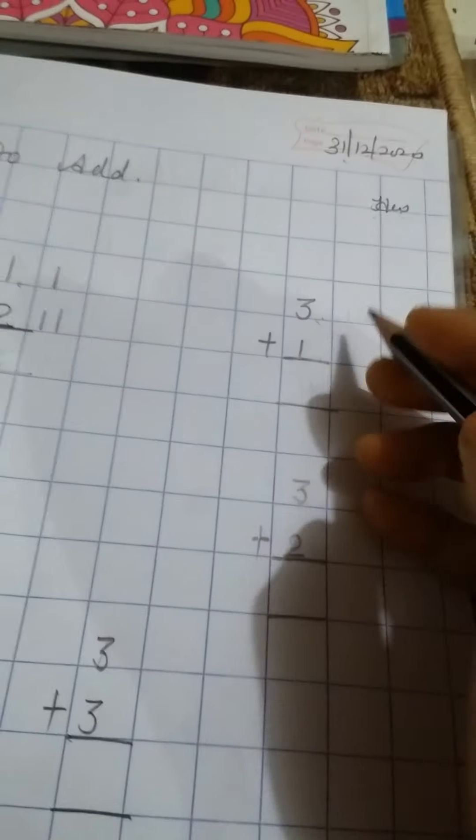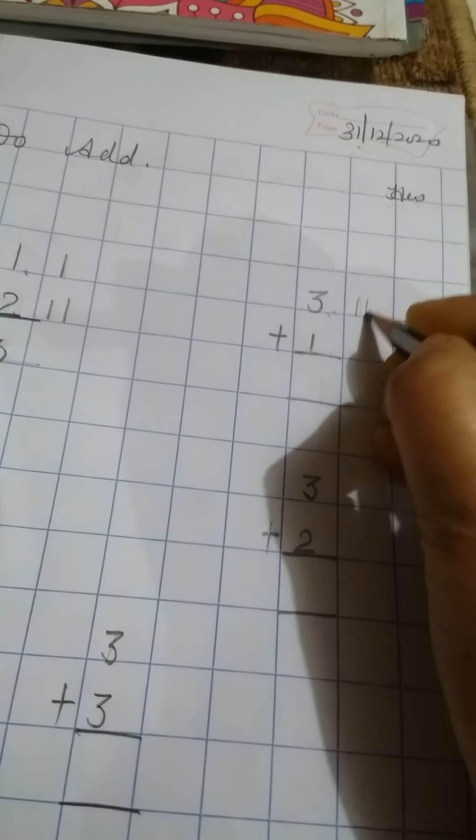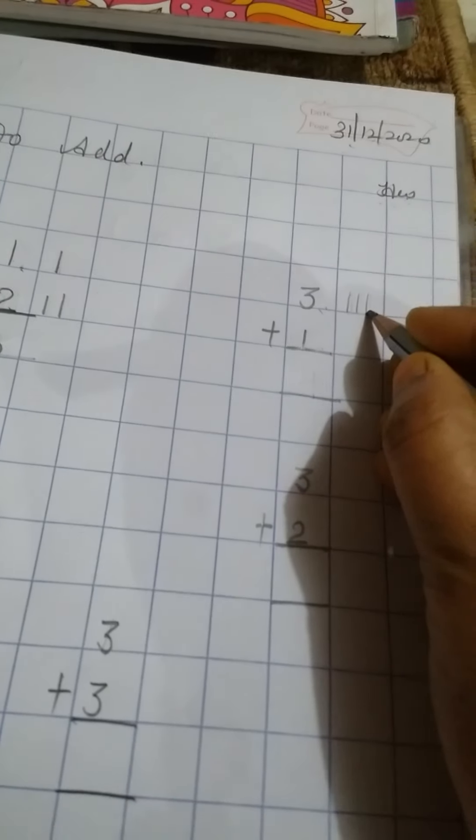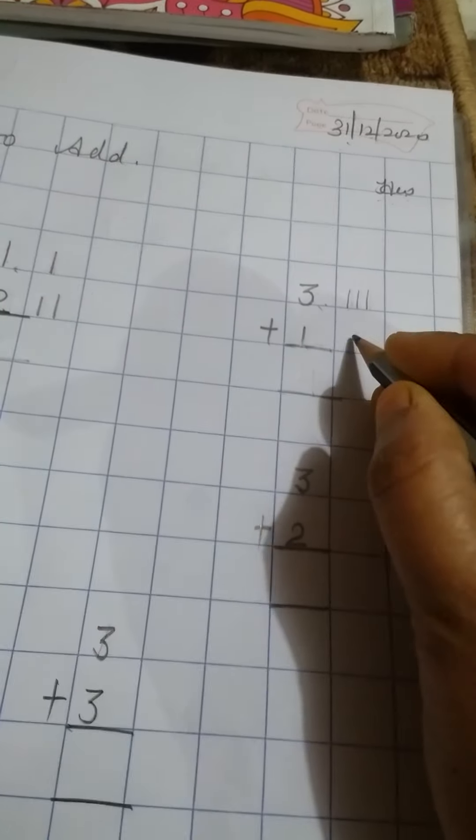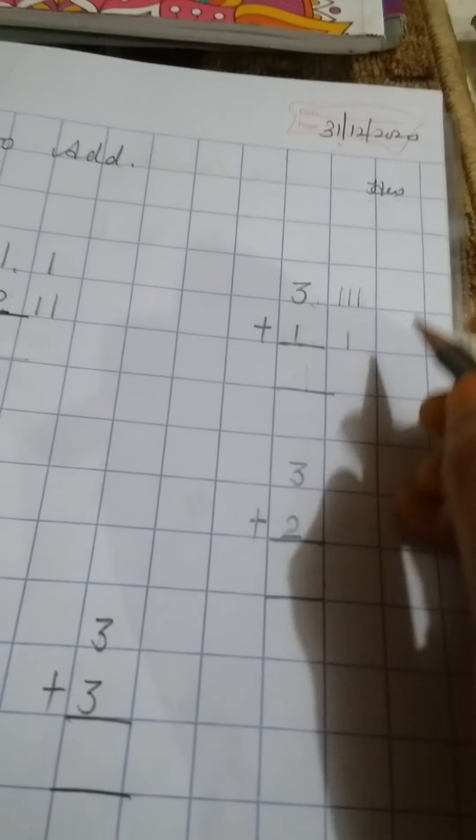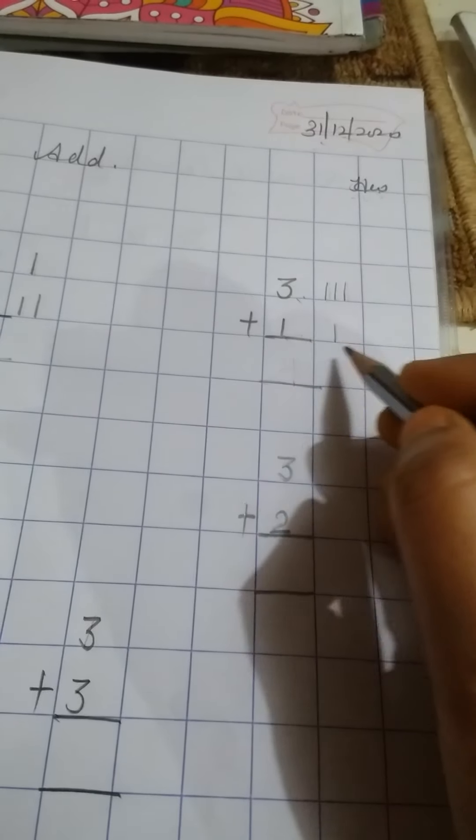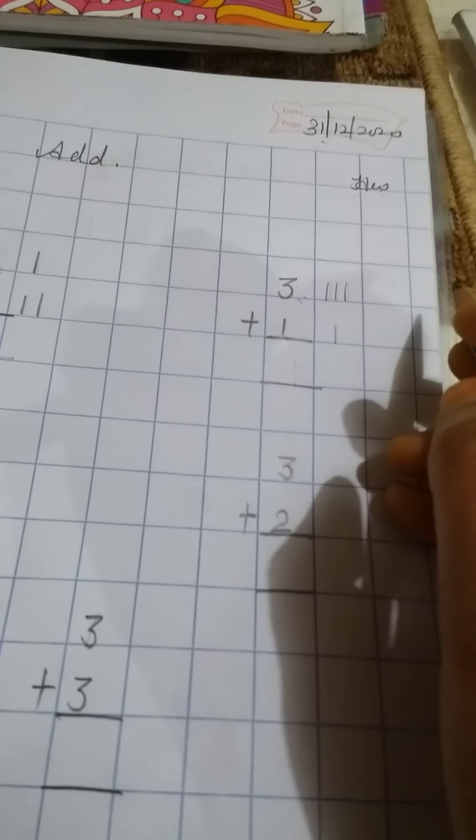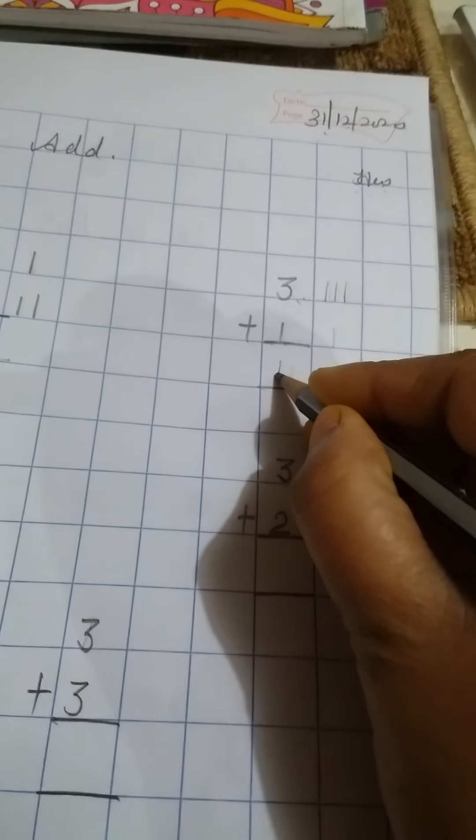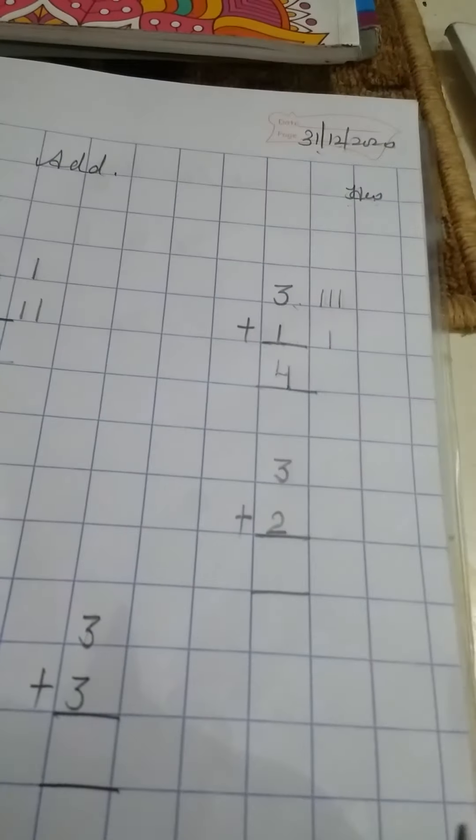Now, next this is three number. So we will draw three lines in front of three: one, two, three. This is one number, so we will draw one line in front of one. Now we will count all these lines: 1, 2, 3, 4. These are four lines, so we will write here 4 number.